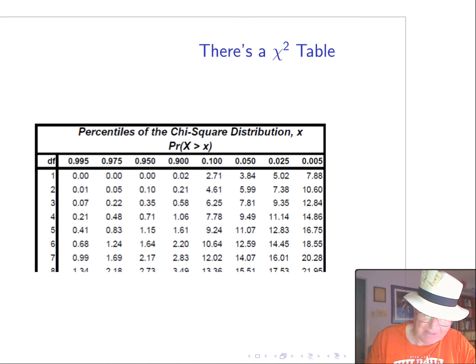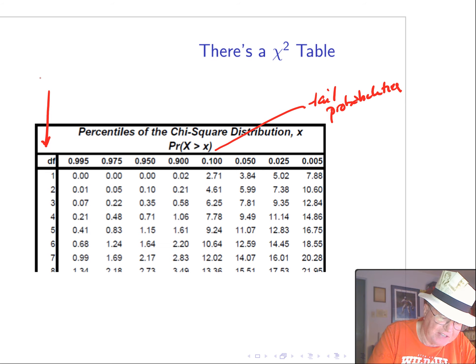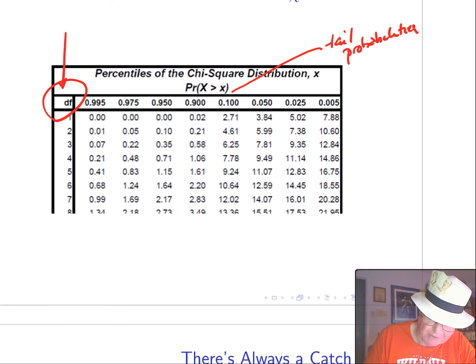This thing, of course, is tabulated. There's a chi-square table. And so these are tail probabilities. And critical values or tail probabilities, of course, depend on how many z-scores that are added up. In this table, this is denoted df for degrees of freedom.